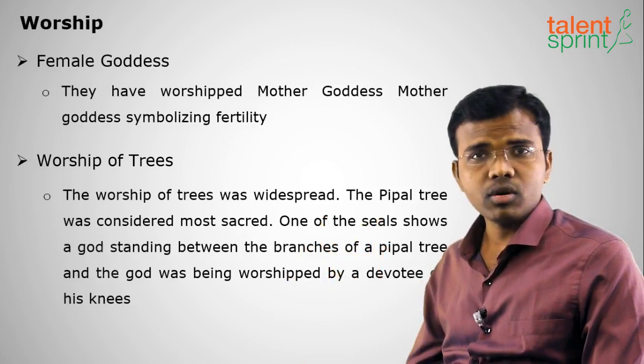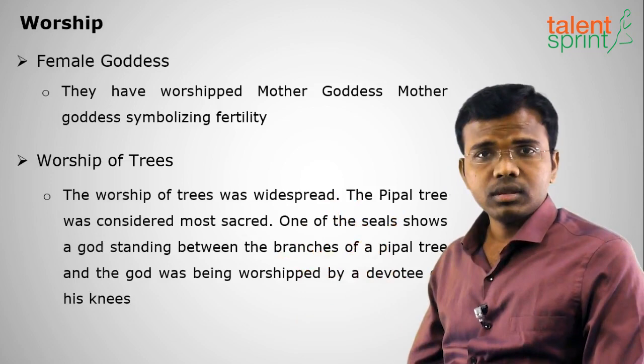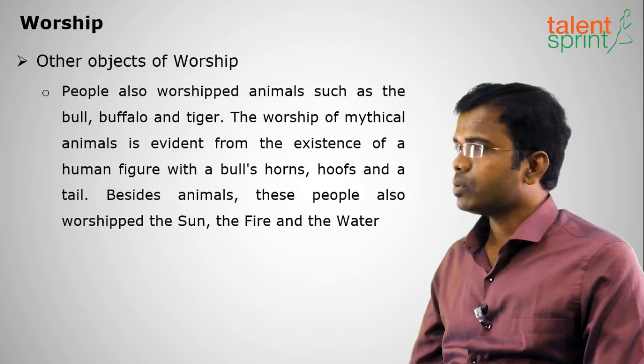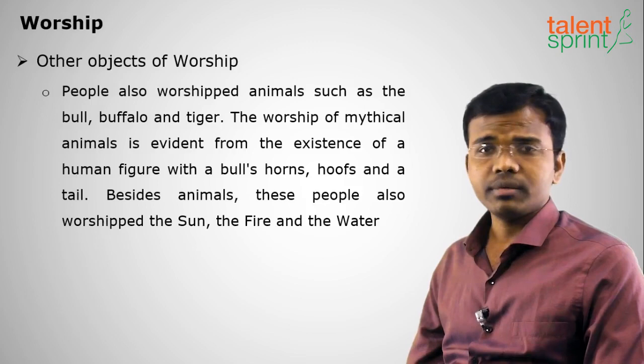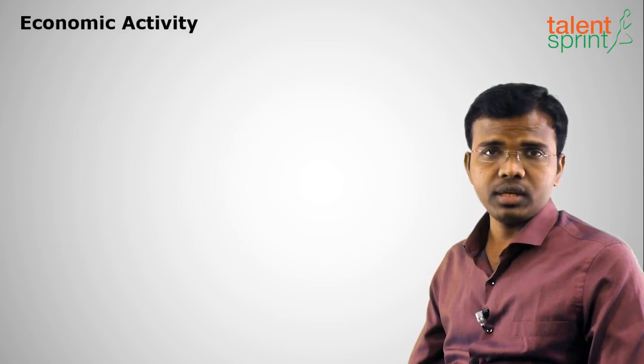Among trees, they worshipped the Peepal tree — the same tree under which Buddha attained enlightenment. Among animals, they worshipped the bull, tiger, buffalo, and one-horned unicorn. These animals can be seen depicted on various seals, including the Pashpatinath Mahadeva seal.